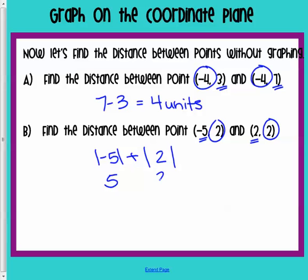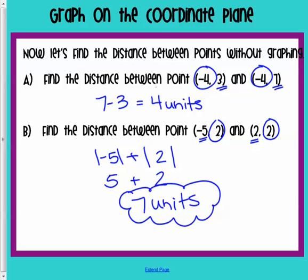We have to ask ourselves, how far away is he from 0, which is 5, and how far away from 0, which is 2. So our answer in this one is 7 units. And we can always go ahead and plot them on a graph to check our work. And that's all I have for you today. See you next time.